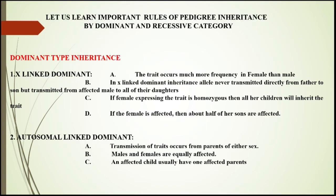Let us learn about the rules of pedigree inheritance. First is X-linked dominant. In X-linked dominant, the trait occurs much more frequently in females than males. The allele is never transmitted directly from father to son, but is transmitted from an affected male to all his daughters. If the female expressing the trait is homozygous (DD), then all her children will inherit the trait. If the affected female is heterozygous (Dd), about half of her sons are affected.